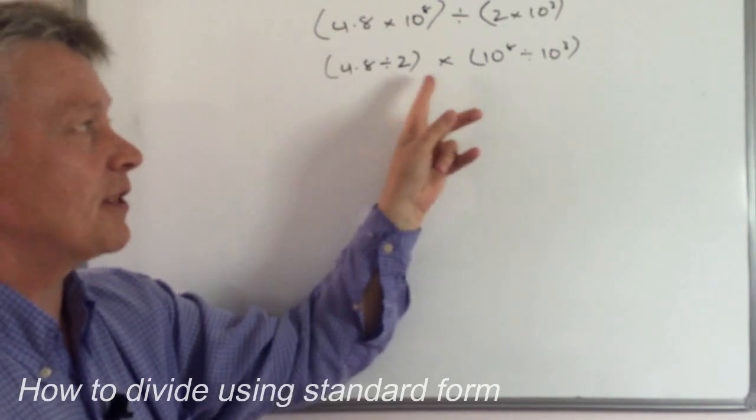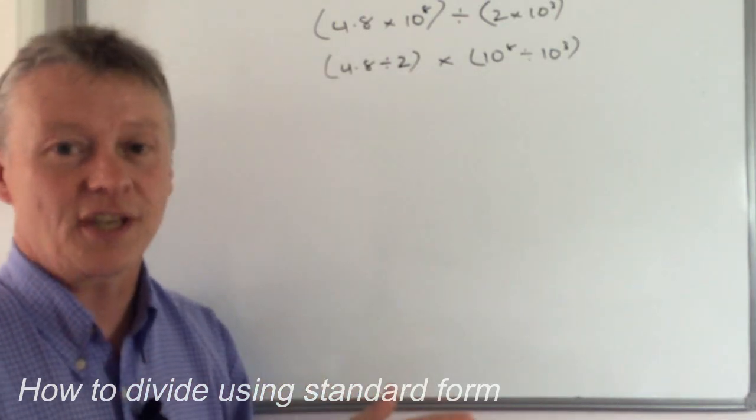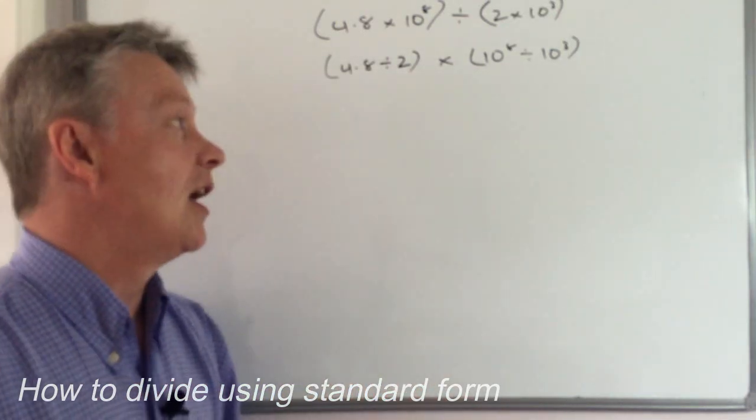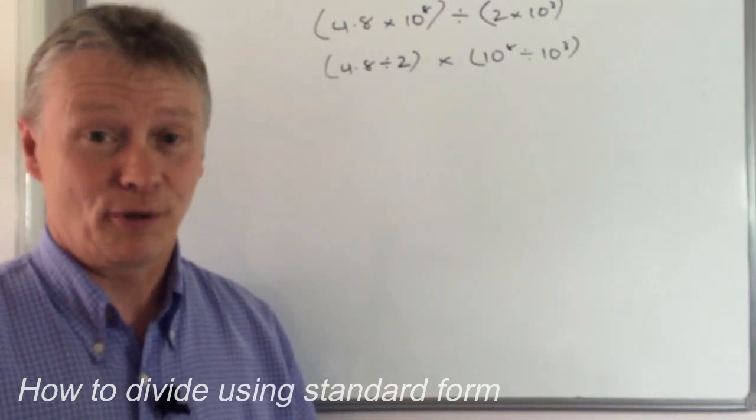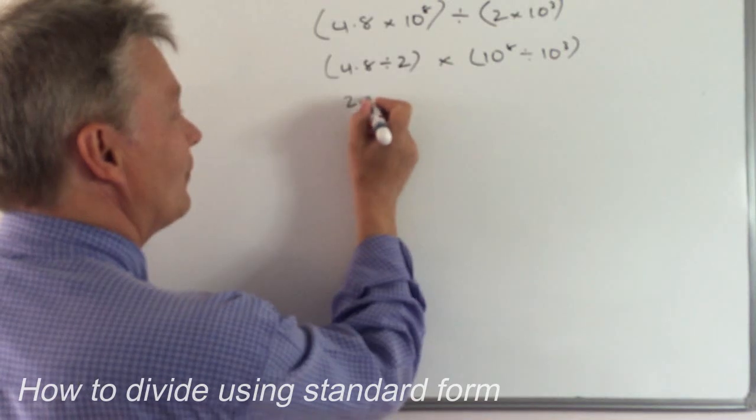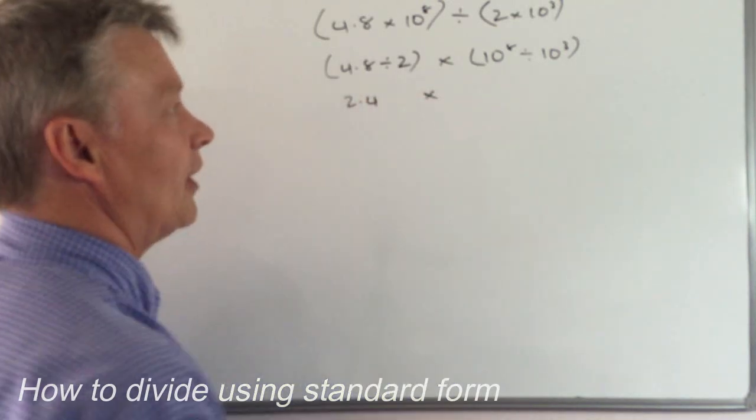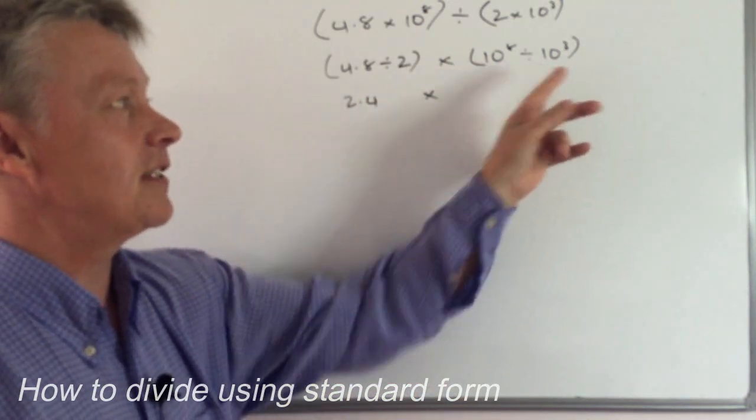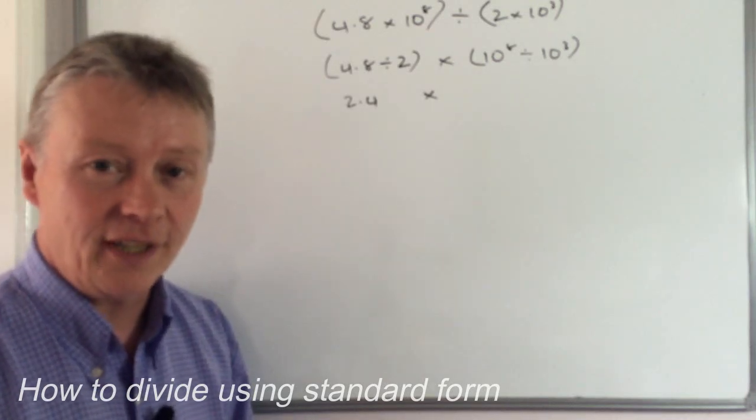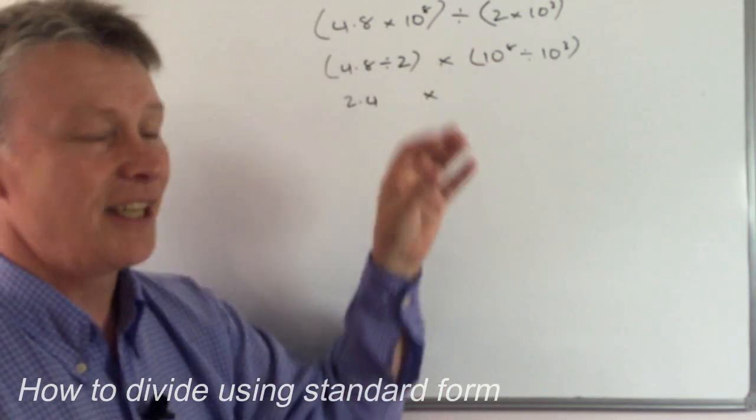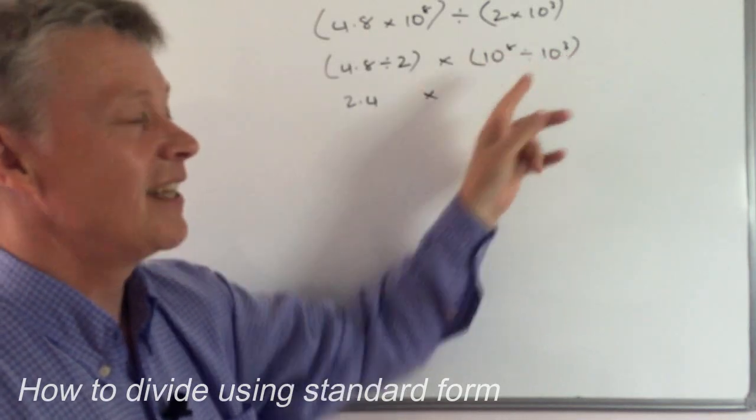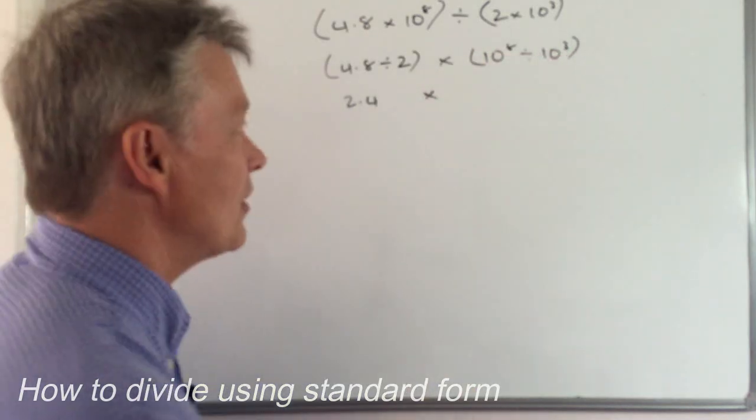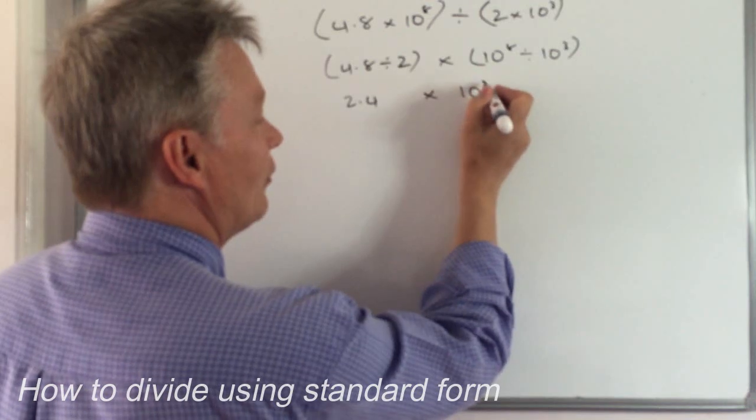So don't get too confused by this multiplication in the middle because that's just how we write the standard form. So 4.8 divided by 2 is 2.4, and that's multiplied by 10 to the power of 8 divided by 10 to the power of 3. Well the laws of indices, which there are videos on this particular channel about, you subtract these two numbers at the top. So that becomes 10 to the power of 5.